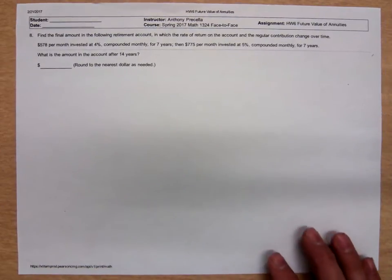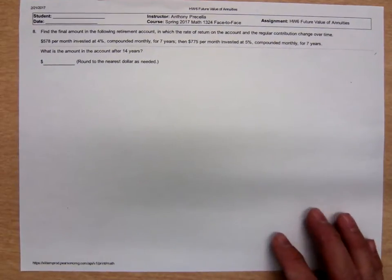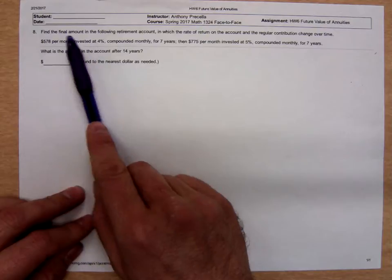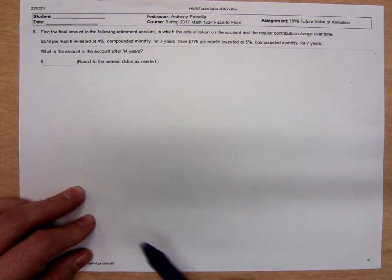Okay, this is Mr. Priscilla continuing with my discussion of financial mathematics. We're primarily looking at annuity formulas, future value, and periodic compound amount. Now, here's a really involved problem.